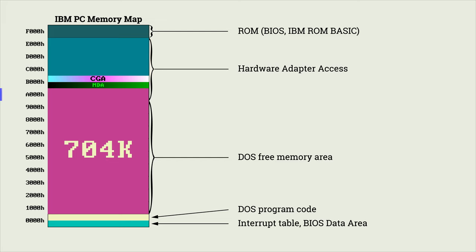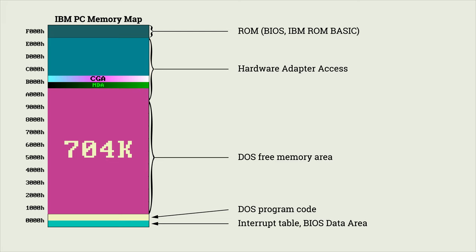Now, if you require EGA or VGA graphics on your 8086 class system, this isn't going to work for you. Extending DOS past 640K moves it into the video memory area for those display standards and disables them. However, there is a partial workaround that I'll cover later in this video, so stick around even if you think this isn't for you.